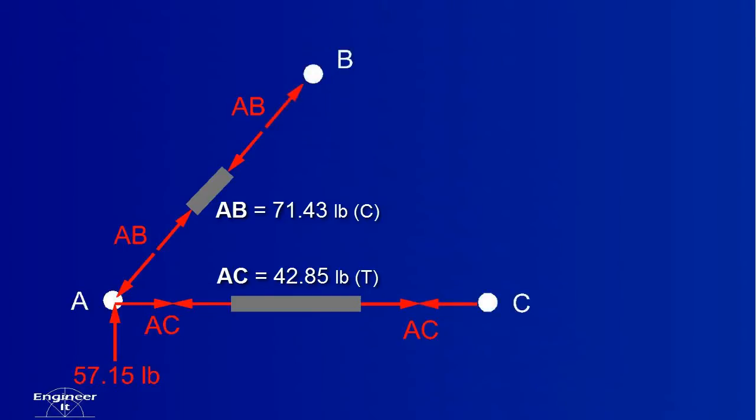When transferring forces from the member back to the next joint, the forces apply equal and opposite again. Now, we can analyze joint B or C by drawing a new free body diagram. Let's do B.